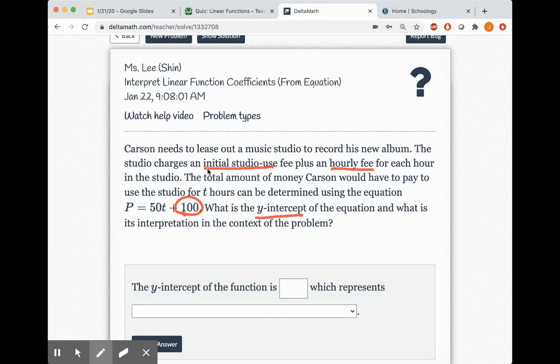So let's take a look at what it says. It says they charge an initial studio use fee. That means to be able to use the studio, like to enter the studio, you have to pay a certain amount of money. And then an hourly fee, so per hour that you're using, they are charging you a certain amount of money.